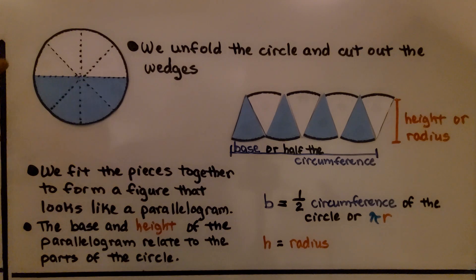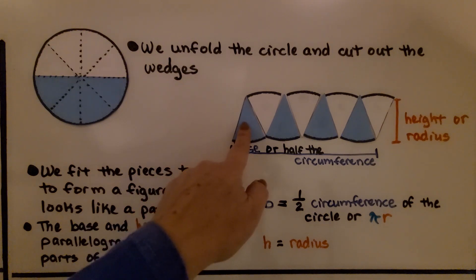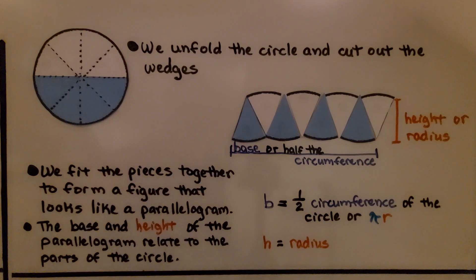Now we unfold the circle and cut out the wedges we made with the fold lines. We fit the pieces together, like that, to form a figure that looks like a parallelogram, and the base and height of the parallelogram relate to the parts of a circle.